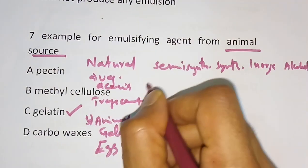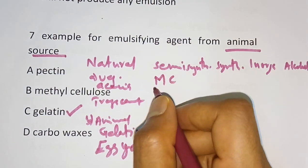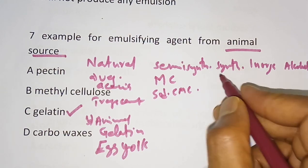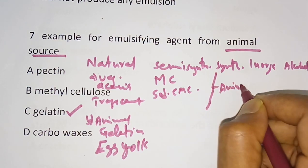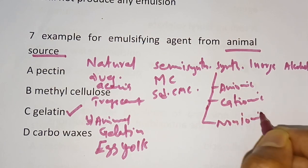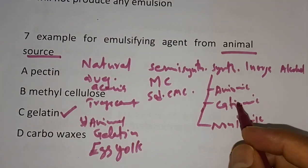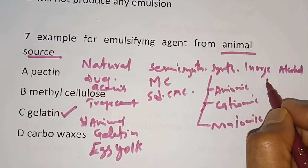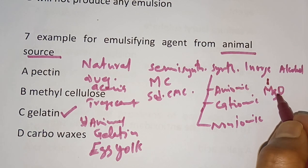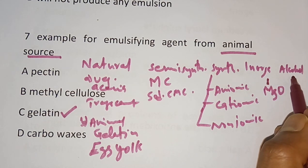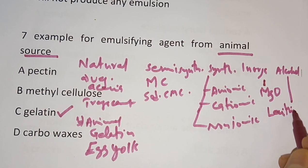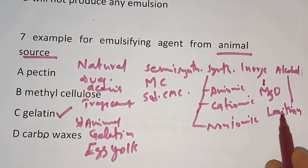Semi-synthetic emulsifying agents include methyl cellulose and sodium carboxymethyl cellulose. Synthetic emulsifying agents are classified into anionic, cationic, and non-ionic. Inorganic examples are milk of magnesia, magnesium oxide, and magnesium trisilicate. Alcohol-type emulsifying agents include carbowaxes and lecithin.